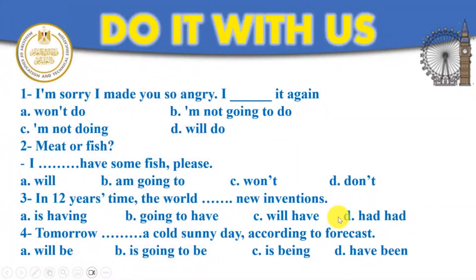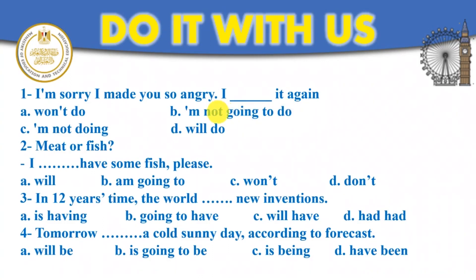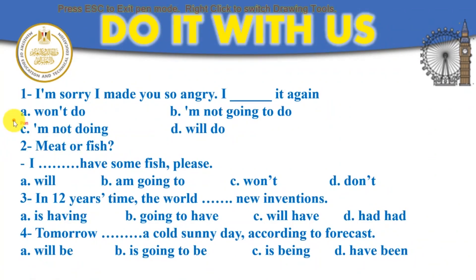Now it's your turn. Answer these questions. I'm sorry, I made you so angry. I won't do it again. So here I am promising you — I won't do it again. We used will here plus the infinitive to express a promise. The answer is letter A: I will not do it again.